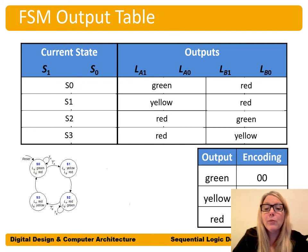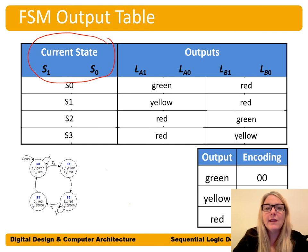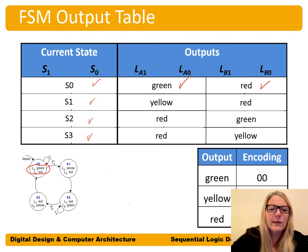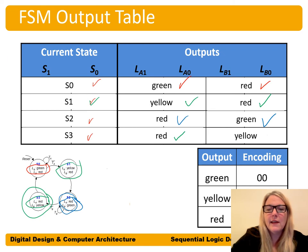We do a similar process with the output table. In a Moore FSM, outputs are completely determined by the current state, so only the current state appears on the left side. In state S0, LA is green and LB is red. In S1, LA is yellow and LB is red. In S2, LA is red and LB is green. In S3, LA is red and LB is yellow.